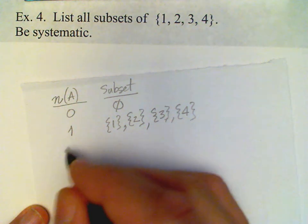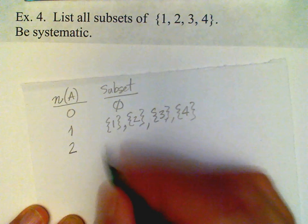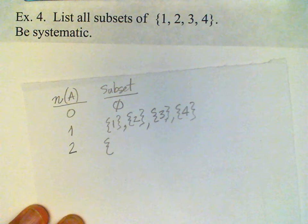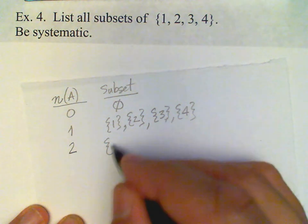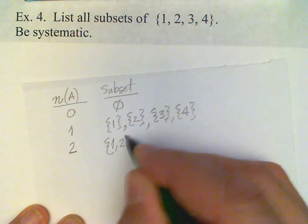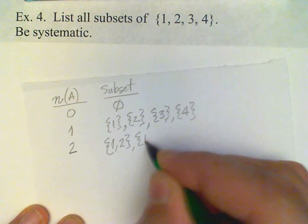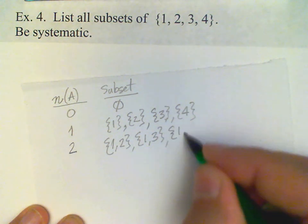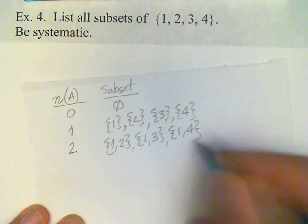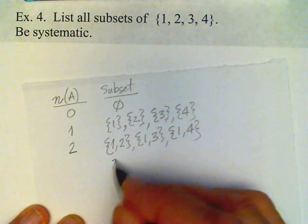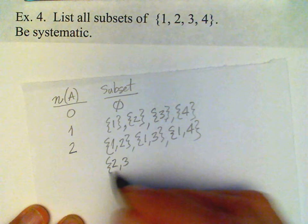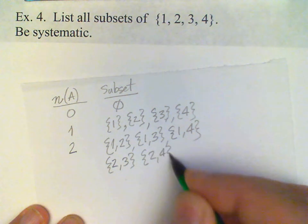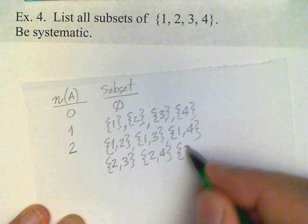If the cardinal number is 2, then there are six possibilities: {1, 2}, {1, 3}, {1, 4}, {2, 3}, {2, 4}, and {3, 4}.